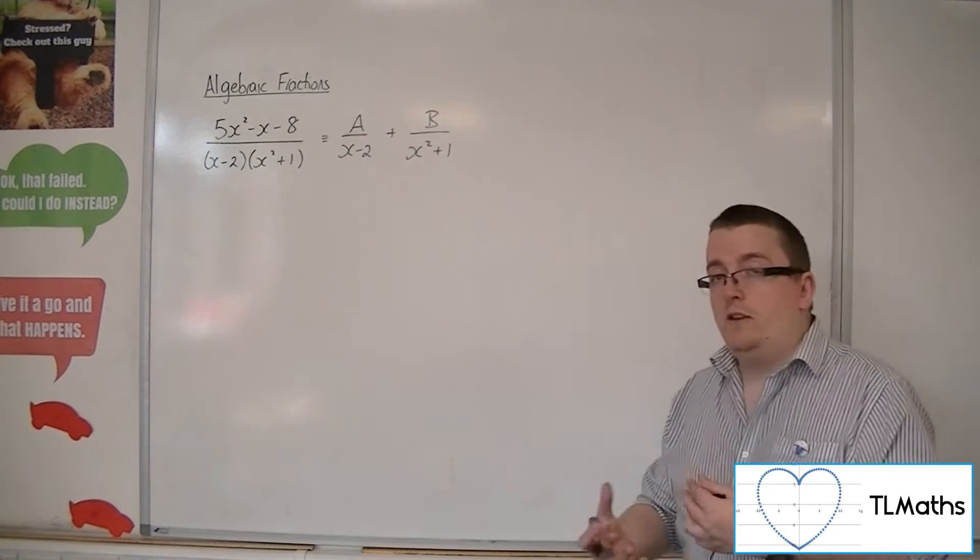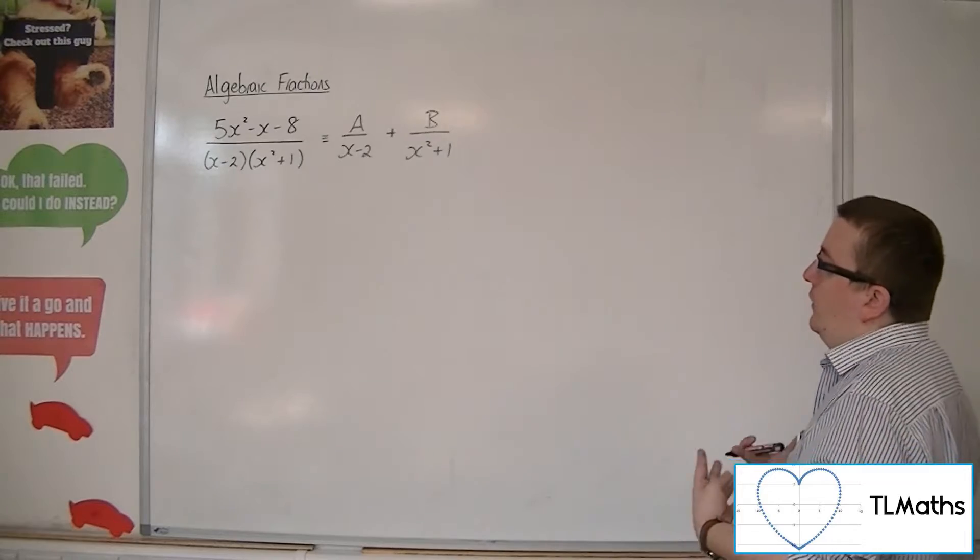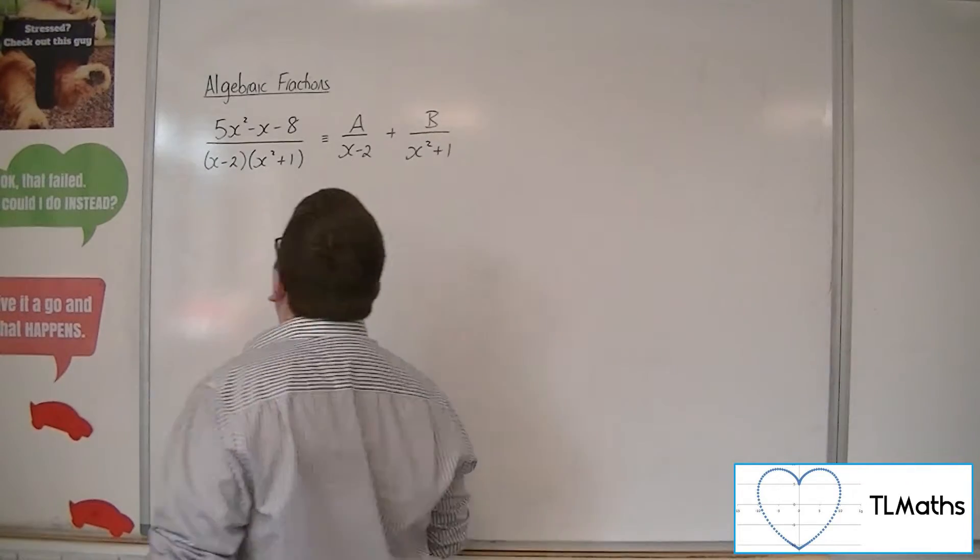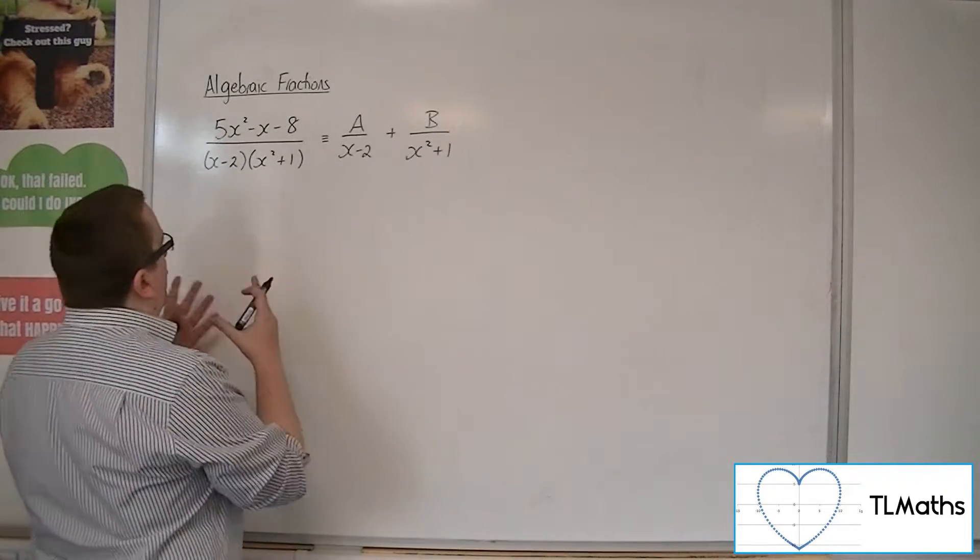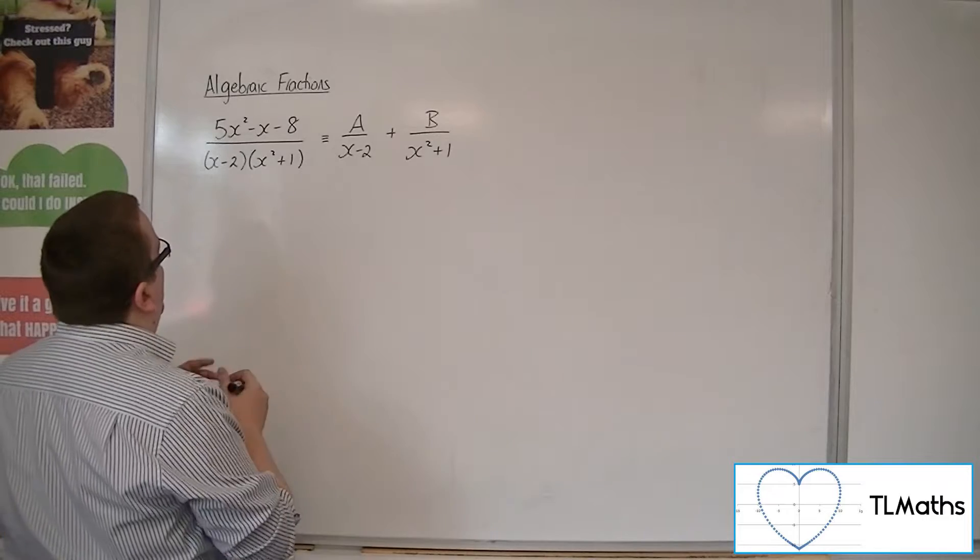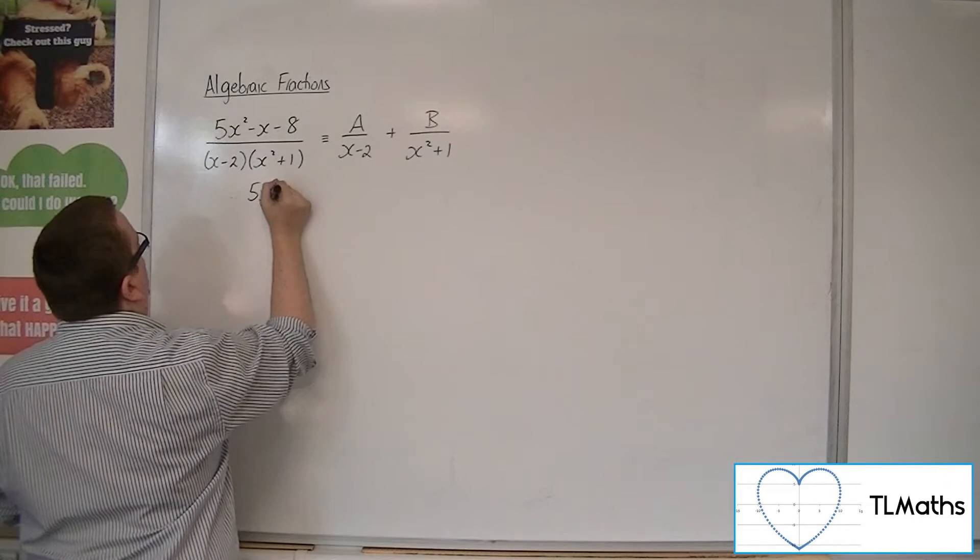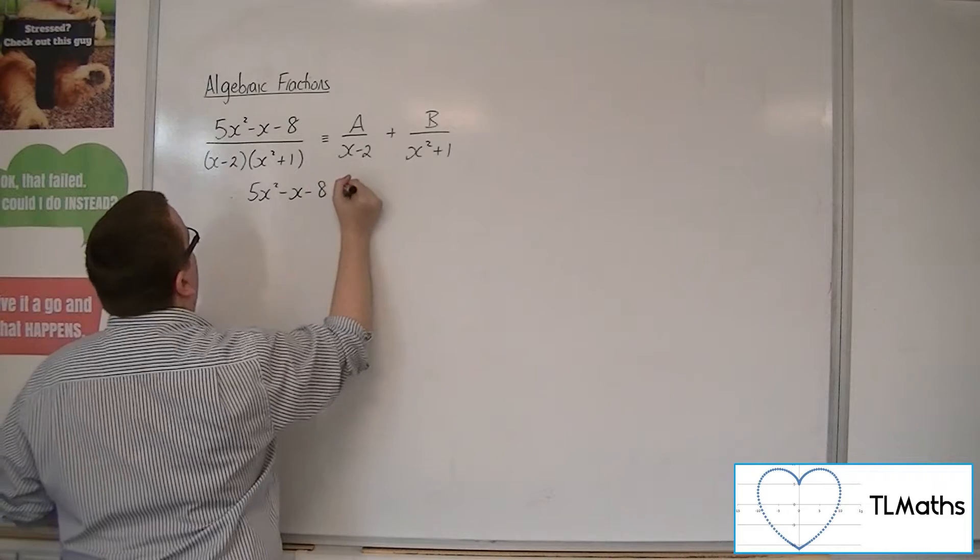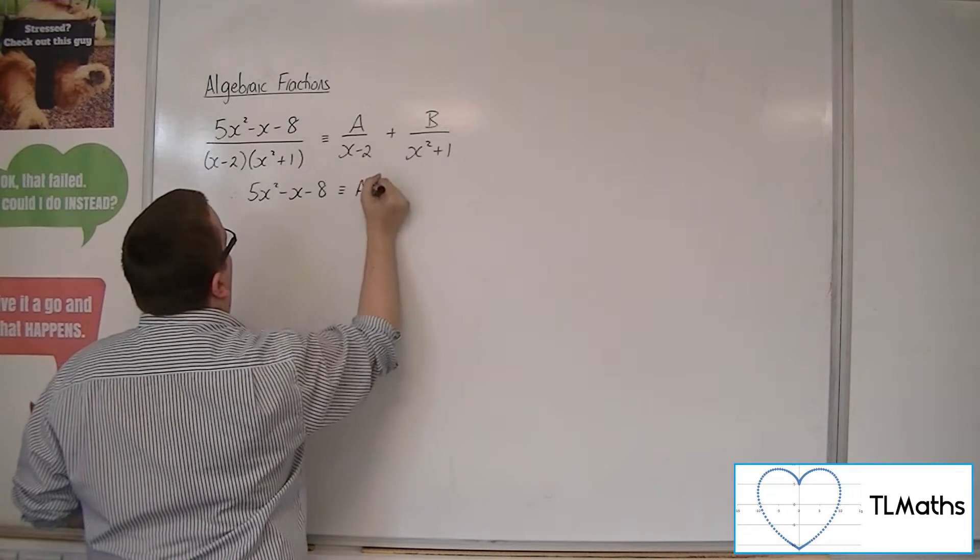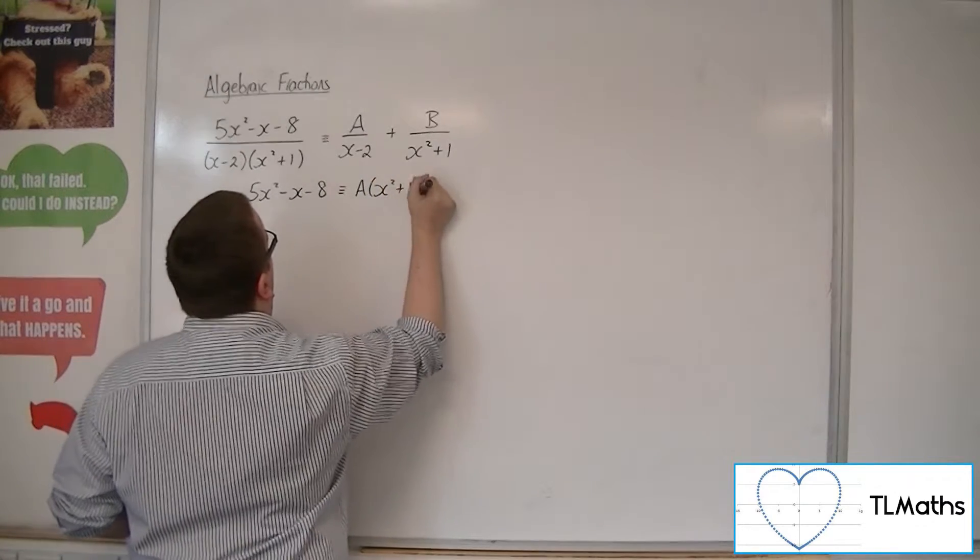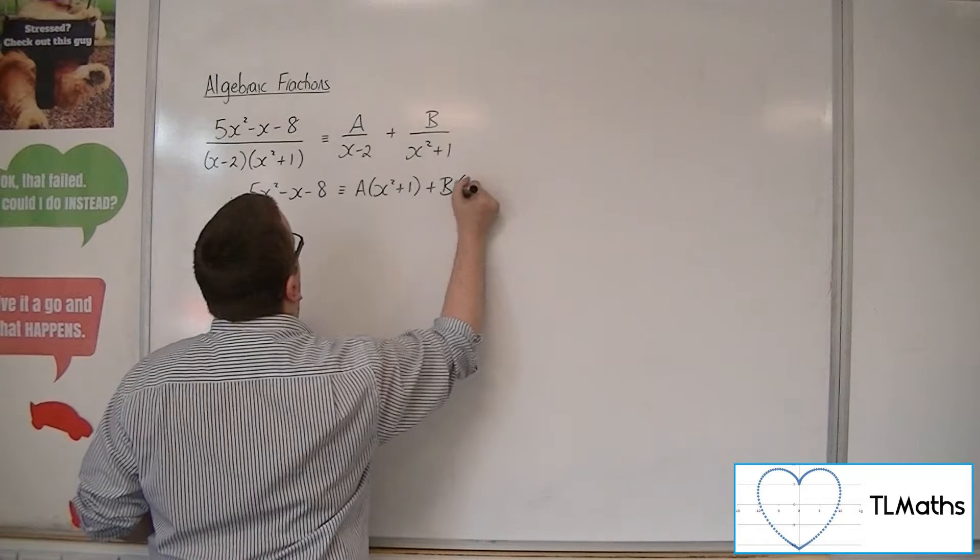So if we go through with that, let's see if this comes out with the correct answer. We can multiply both top and bottom by the x minus 2 x squared plus 1. So we can have the 5x squared minus x minus 8 is equivalent to A lots of x squared plus 1 plus B lots of x minus 2.